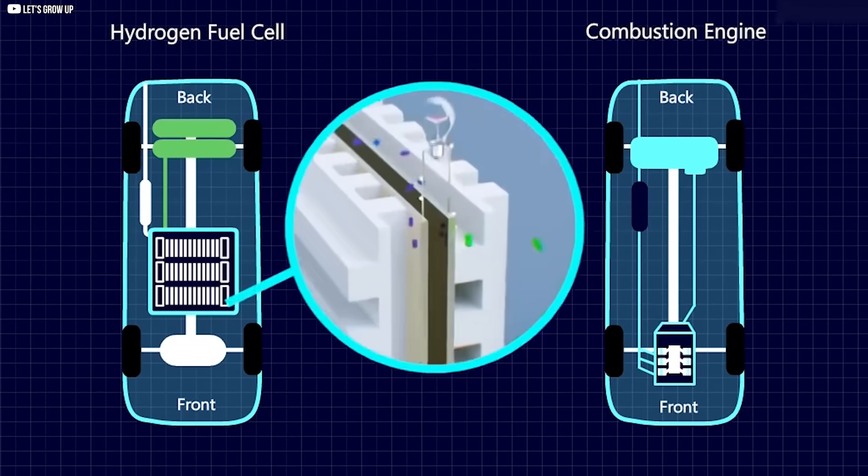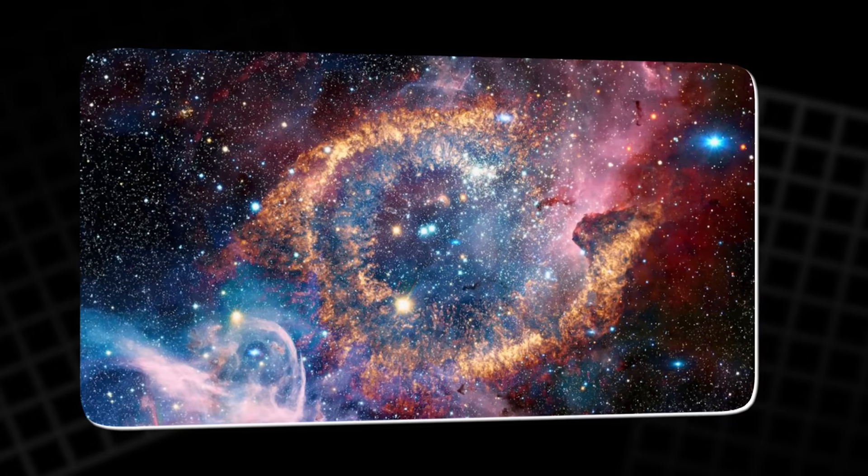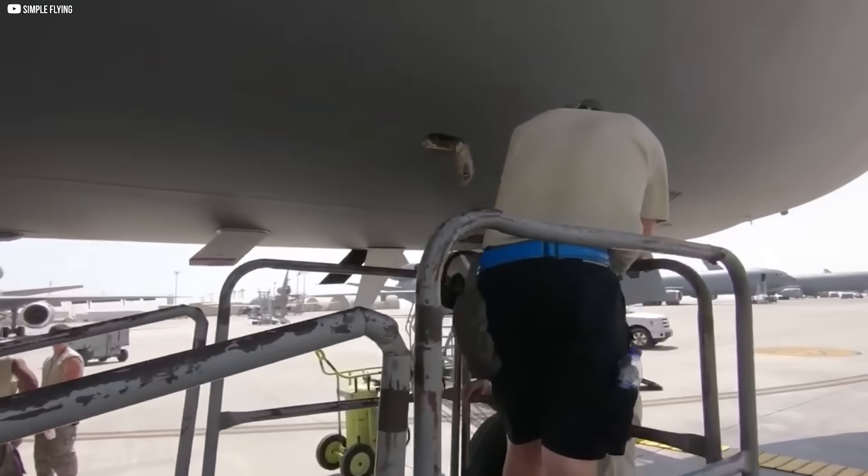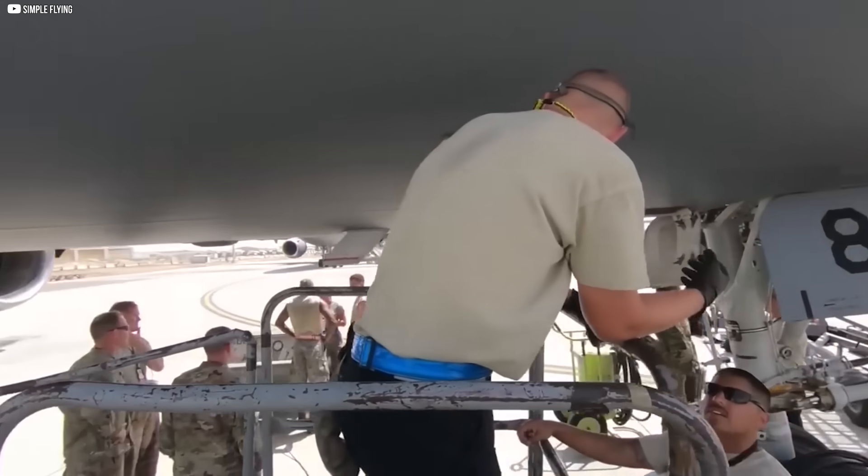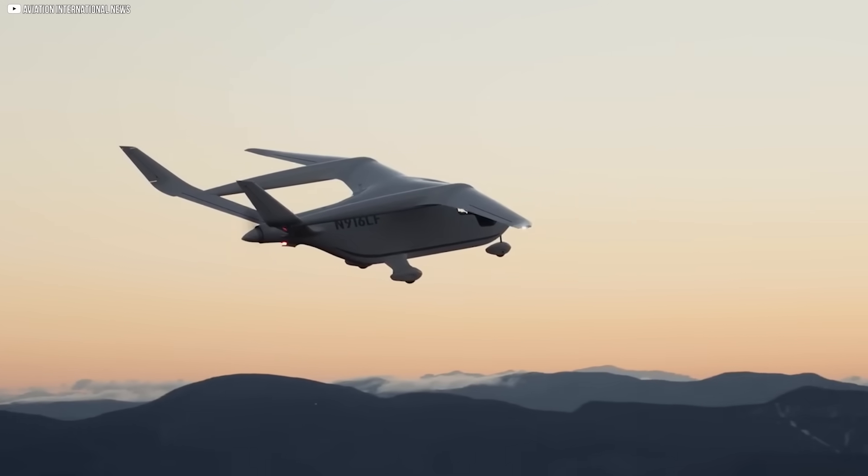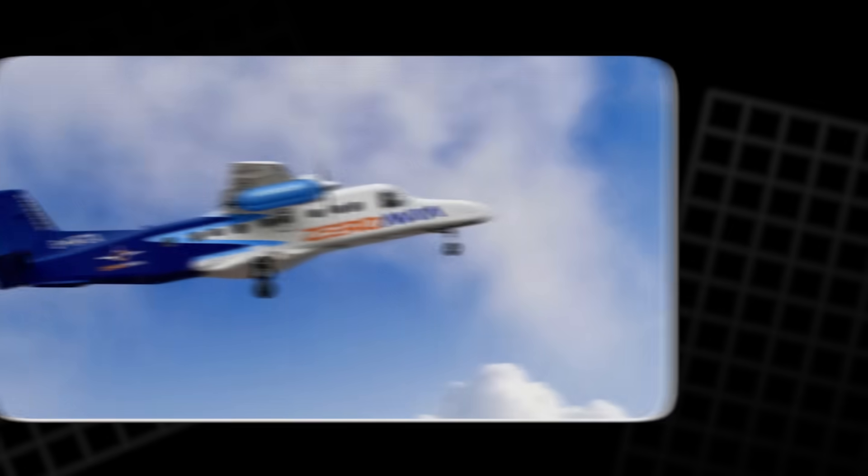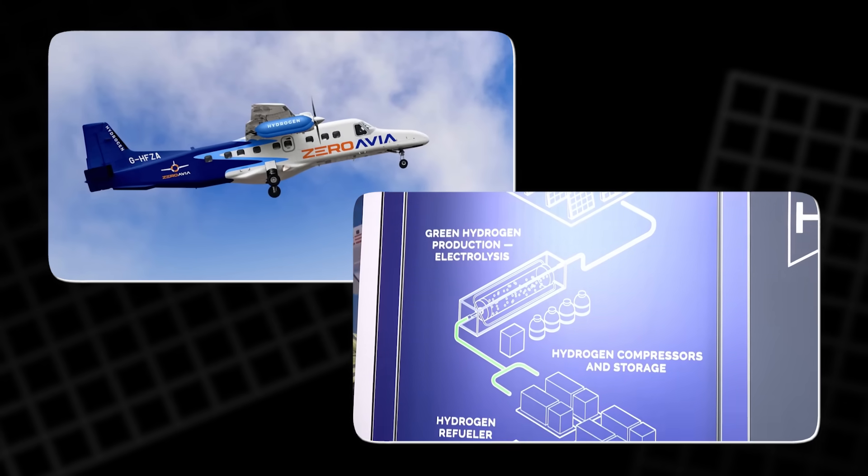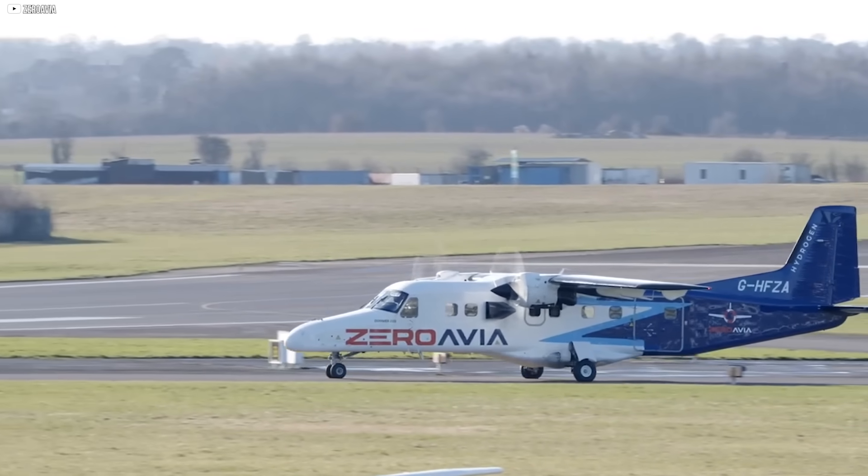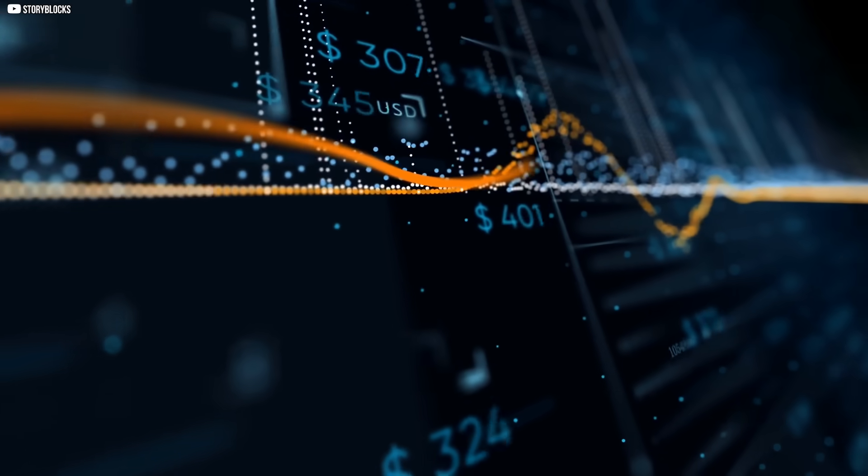But there's a catch. Hydrogen is notoriously difficult to store and transport. It's the smallest molecule in the universe, and it leaks easily. Keeping it under control requires heavy, high-pressure tanks that add significant weight to any aircraft. Producing green hydrogen, using renewable energy to split water, is also expensive and energy-intensive. That hasn't stopped companies from trying. Firms like Zero Avia are testing hydrogen-powered aircraft, but real-world deployment is slow. Infrastructure remains a huge bottleneck, and the economics just don't add up yet.